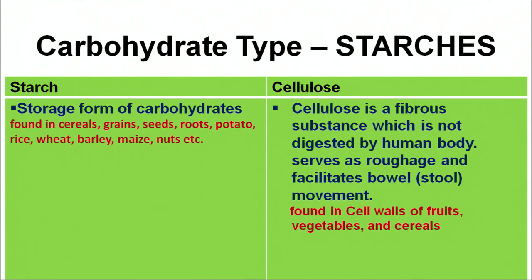Now let us move on to the carbohydrate type that is starches. There are two categories: starch and cellulose. Starch is the storage form of carbohydrate, found in food items like cereals, rice, and potato. Cellulose is a fibrous substance which is not digested by the body but serves as roughage, helping in bowel movements and the excretion process. It is found in the cell walls of fruits, vegetables, and cereals.